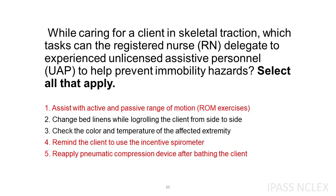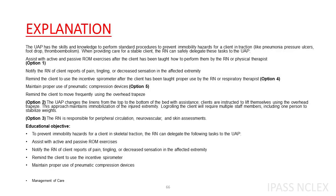Correct answer. The UAP has the skills and knowledge to perform standard procedures to prevent immobility hazards for a client in traction, like pneumonia, pressure ulcers, foot drop, and thromboembolism. When providing care for a stable client, the RN can safely delegate these tasks to the UAP: assist with active and passive ROM exercises after the client has been taught how to perform them by the RN or physical therapist, option 1. Remind the client to use the incentive spirometer, option 4. Maintain proper use of pneumatic compression devices, option 5.